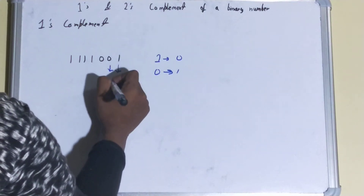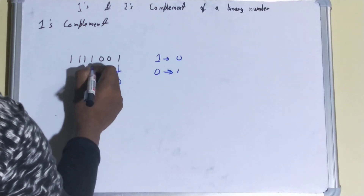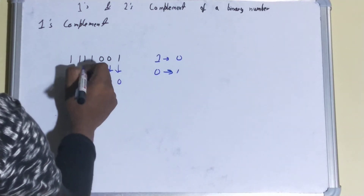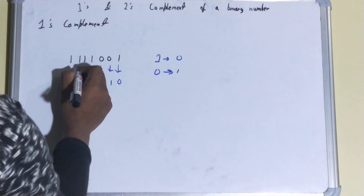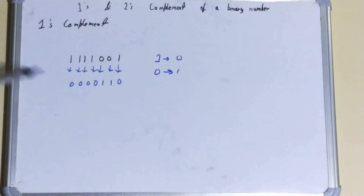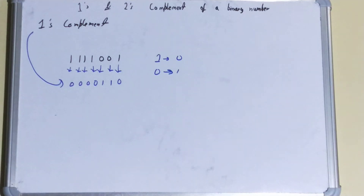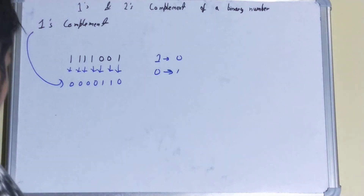So this one becomes zero, this zero becomes one, this zero becomes one, this one becomes zero, this one becomes zero, and this one becomes zero. As you can see, it is not at all tough to find the ones complement. Whatever is your result is the ones complement. This is not at all tough.